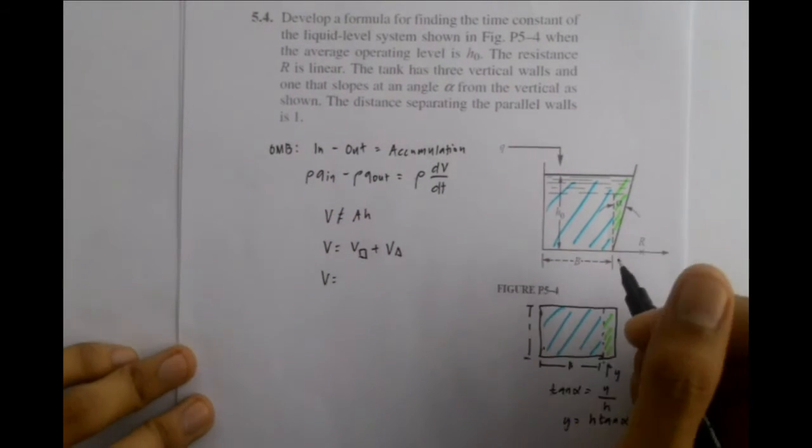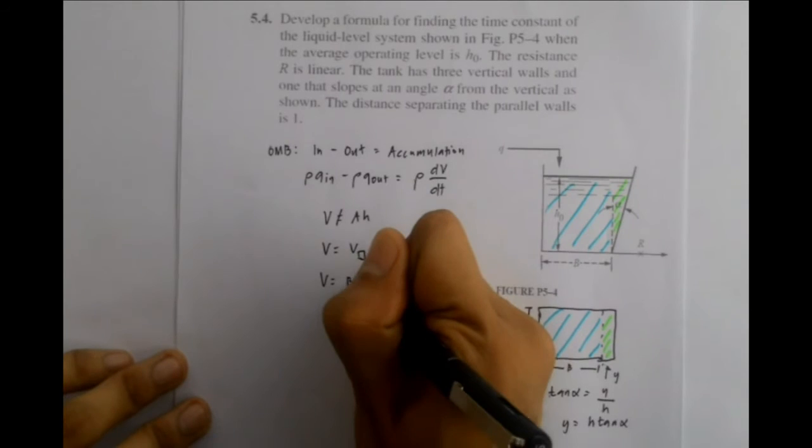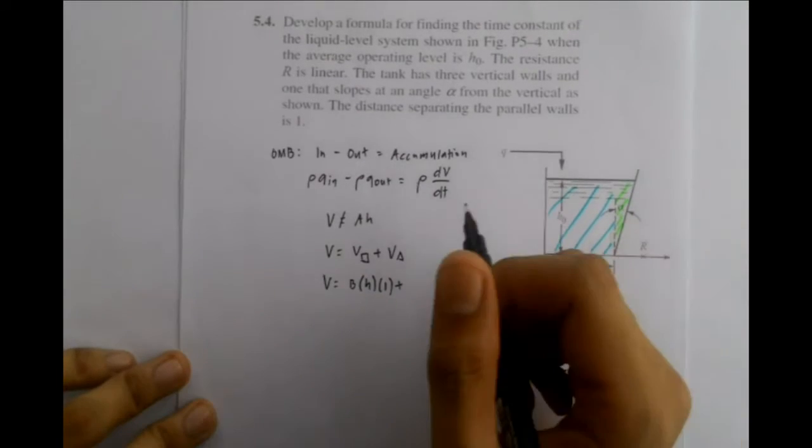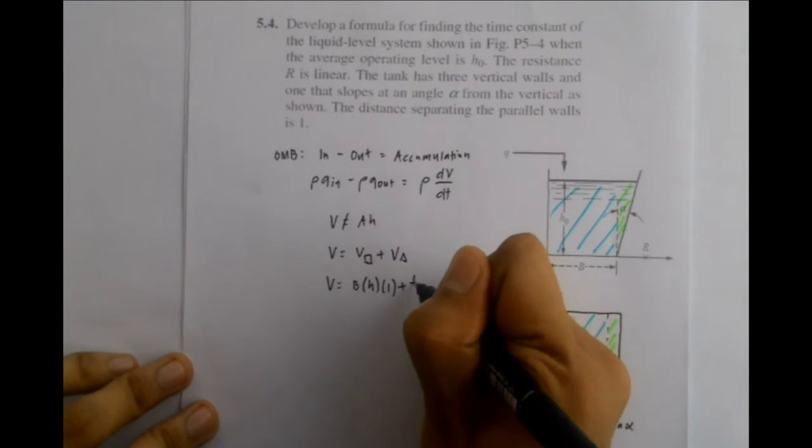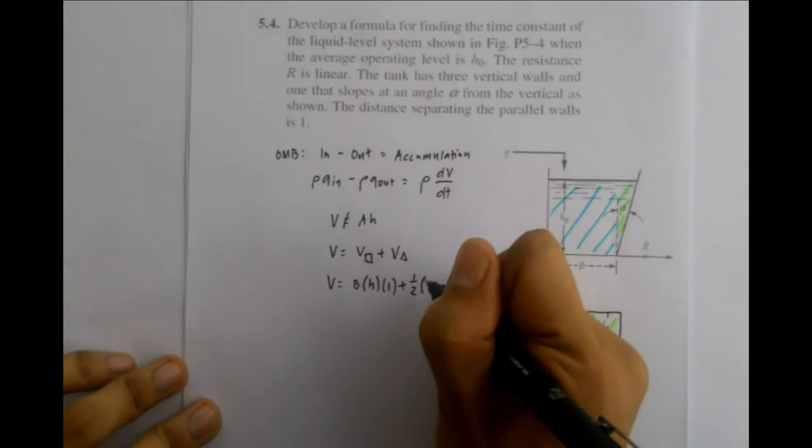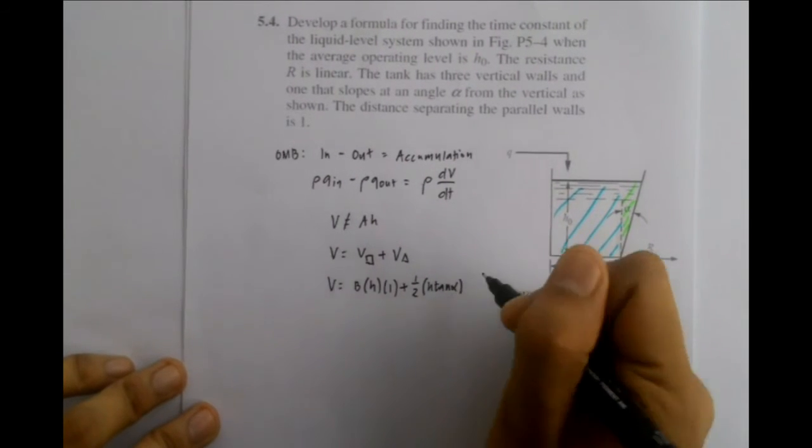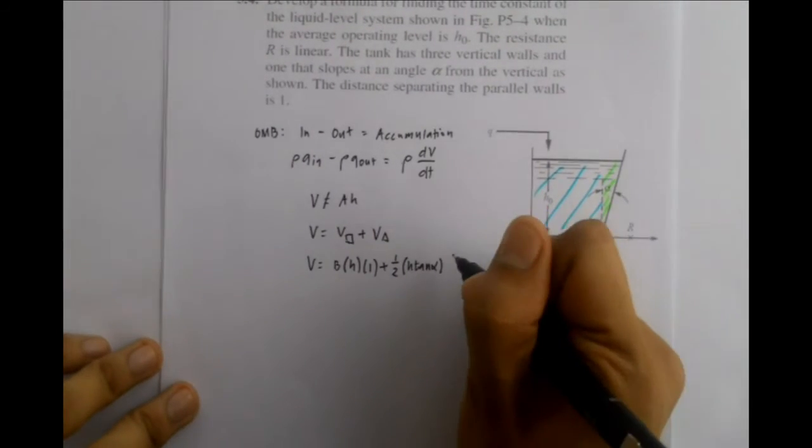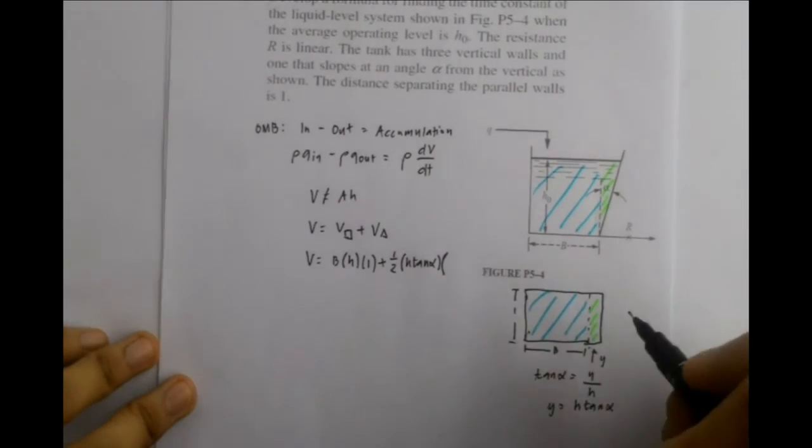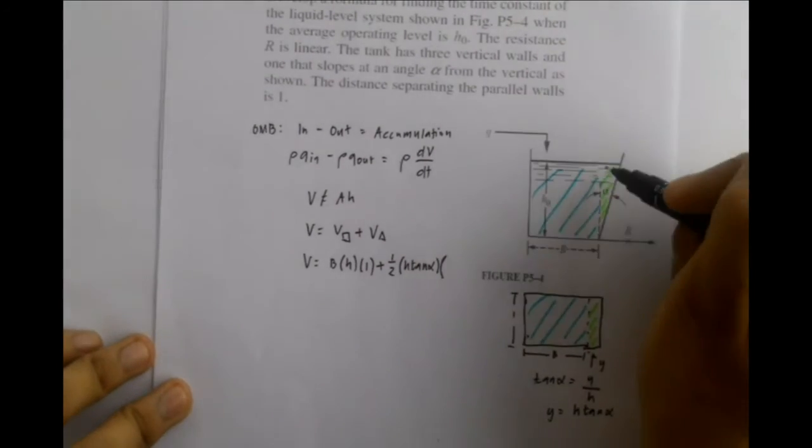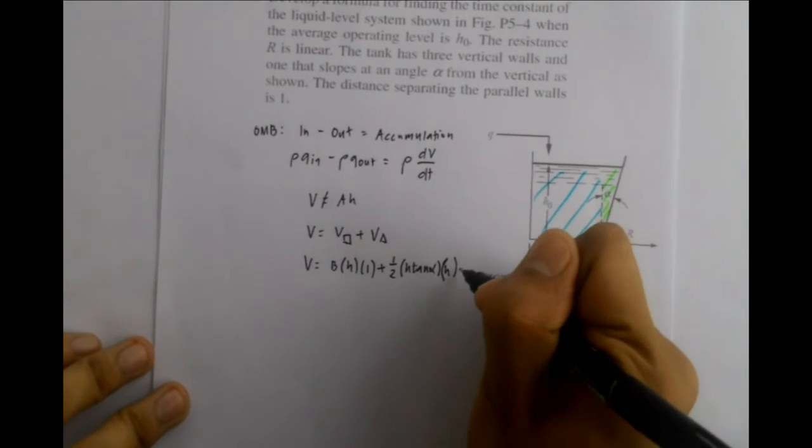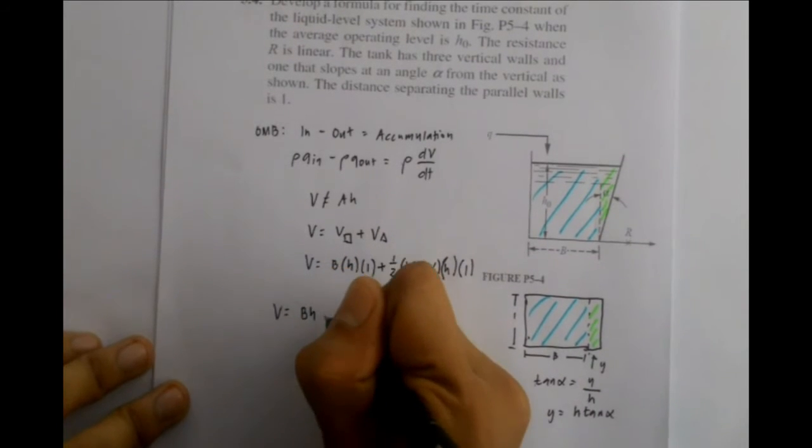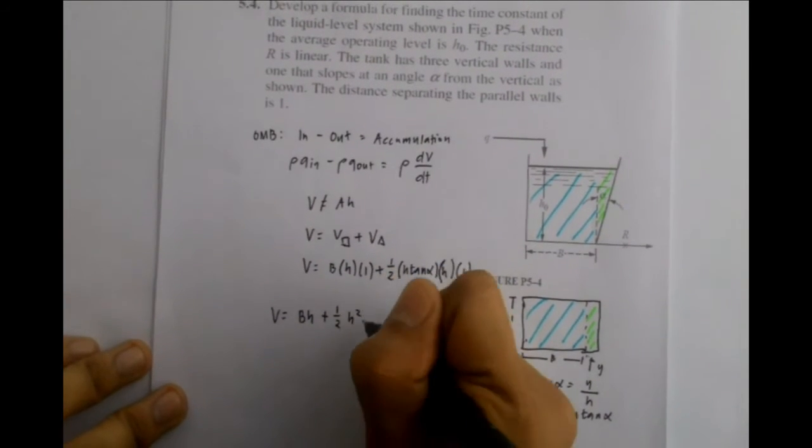Thus, we get V equals B times H times l for the rectangular component, plus the area of the triangular part, which is one-half times the height of the triangle H tangent alpha, since the angle is with respect to the vertical axis, times the base of the triangle, which in this case, H times l. Simplifying further, we get V equals BH plus one-half H squared tangent alpha.